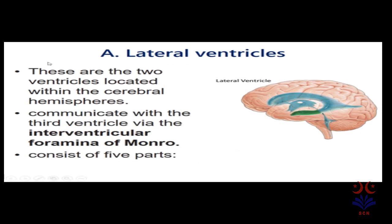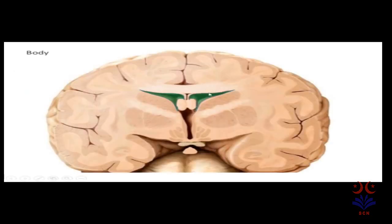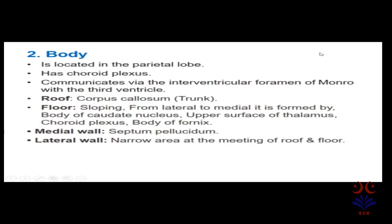Now we see the lateral ventricle in detail. These are two ventricles located within the cerebral hemisphere, one in each cerebral hemisphere. They communicate with the third ventricle via the interventricular foramen of Monroe. The lateral ventricle consists of five parts. The body is located in the parietal lobe, has choroid plexus, and communicates via the interventricular foramen of Monroe with the third ventricle.